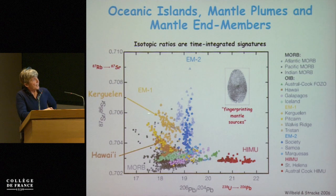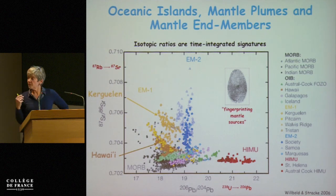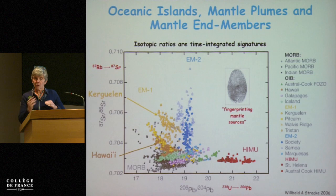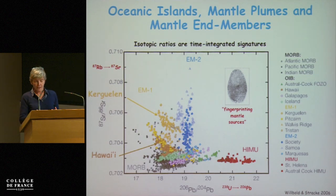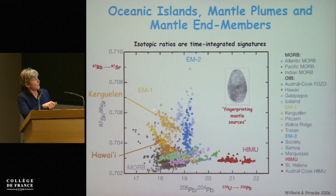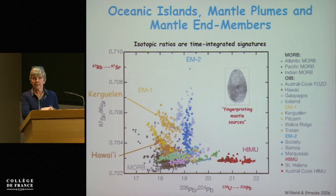The point I want to make here is that the deep mantle is very heterogeneous, but you don't cover everything. There are some systematics, and what we'll focus on is on Hawaii and a parallel with Kerguelen. There is a reason to make this parallel.